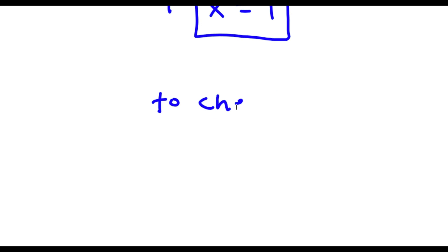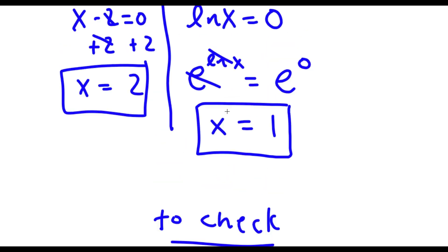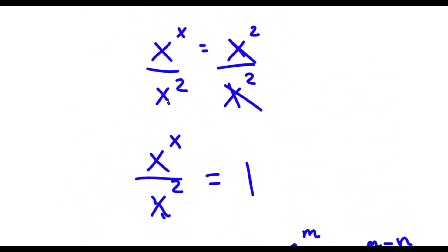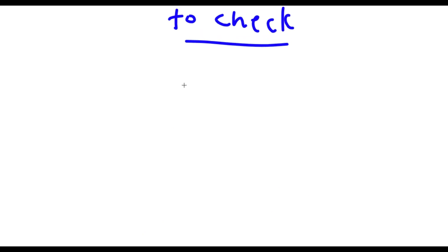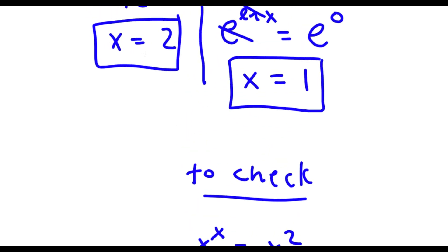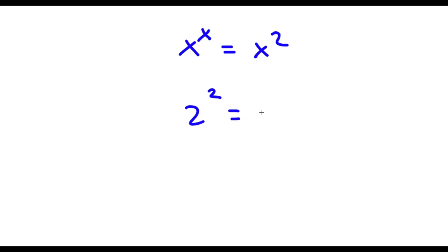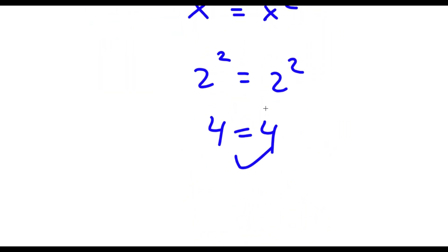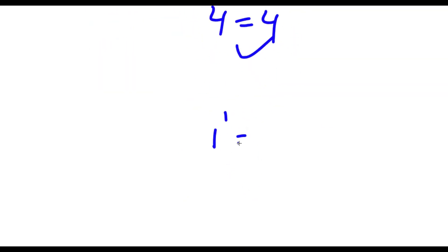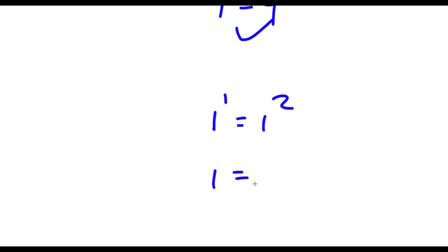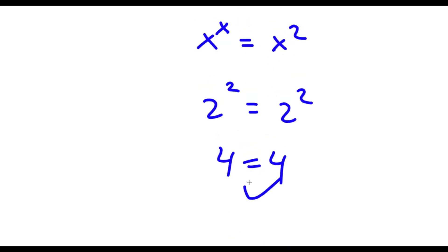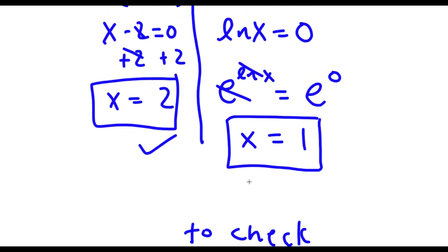Now to check — my equation is x to the power of x is equal to x to the power of 2. For x equals 2: 2 to the power of 2 is equal to 2 to the power of 2, so 4 equals 4. That's correct. For x equals 1: 1 to the power of 1 is equal to 1 to the power of 2, so 1 equals 1. Both solutions check out.